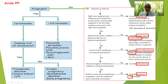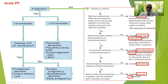Carnett's sign means: if you elevate the head or legs of the patient and press on the abdomen and the patient feels pain, the cause is in the anterior abdominal wall due to contraction of the anterior abdominal wall muscles.